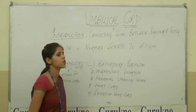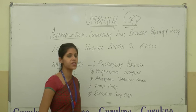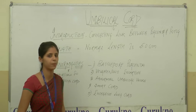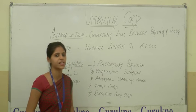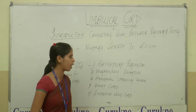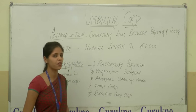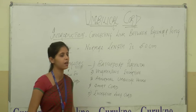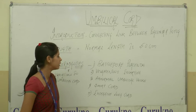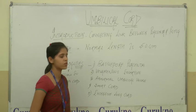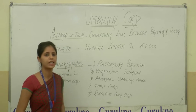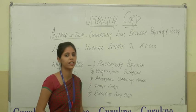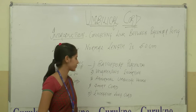Next, short cord. Short cord is defined as a length of the umbilical cord less than 40 cm. Complications of short cord are very rare, but short cord may lead to difficulty during the time of labor.